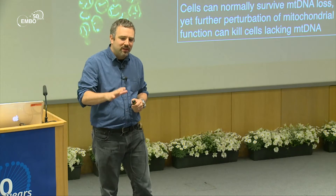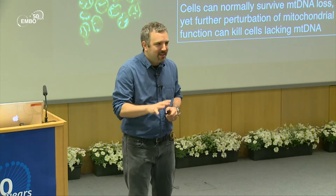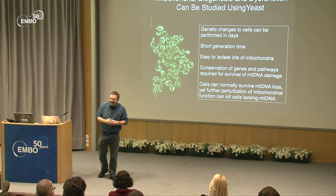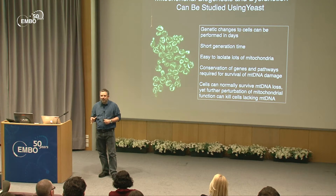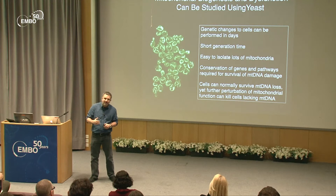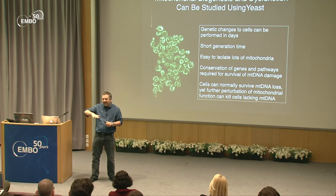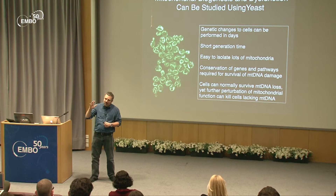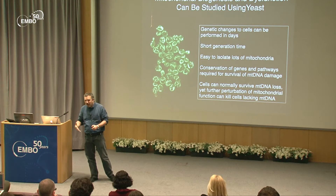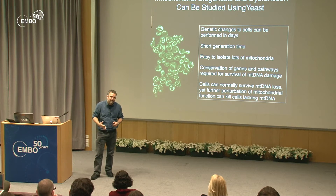Cells can normally survive mitochondrial DNA damage, but further perturbation of mitochondrial function can kill cells lacking mitochondrial DNA. This is a benefit for a geneticist because it provides a sensitized background for genetic selections, allowing unbiased discovery of genes involved in this phenomenon.